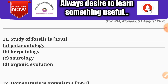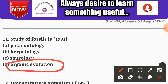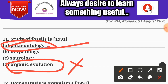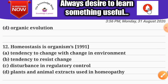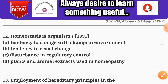Question number eleven: study of fossils is called — Options: A) palaeontology; B) herpetology; C) serology; D) organic evolution. The correct answer is A — palaeontology.